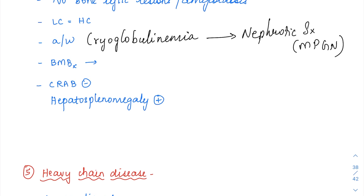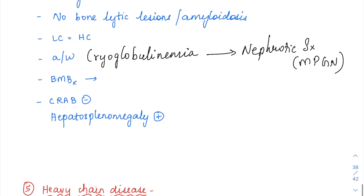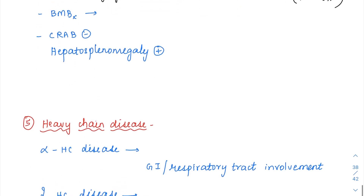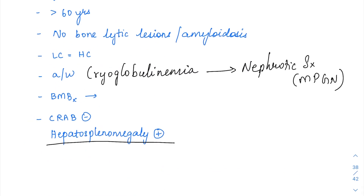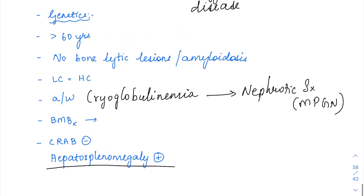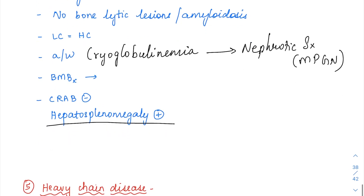There is not going to be any end organ damage, so the CRAB criteria is not going to be fulfilled as in multiple myeloma — CRAB criteria will be negative. There is no bone lytic lesion, no renal failure, no anemia, and no hypercalcemia. However, patients here usually have hepatosplenomegaly, which we don't typically see in multiple myeloma. So in Waldenstrom's macroglobulinemia, hepatosplenomegaly is present but CRAB criteria is negative.